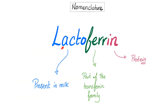Lactoferrin nomenclature. What does lacto mean? From lactic, because lactoferrin is present in milk — whether it's breast milk, cow milk, etc. Ferrin: anything that ends in -in is usually a protein. Yes, this is a glycoprotein. Ferric — ferrin, you remember the iron? Because this is part of the transferrin family.